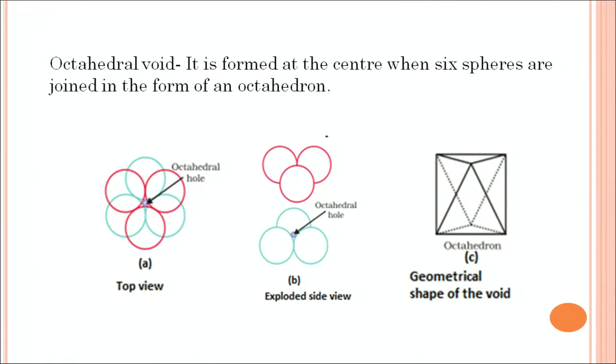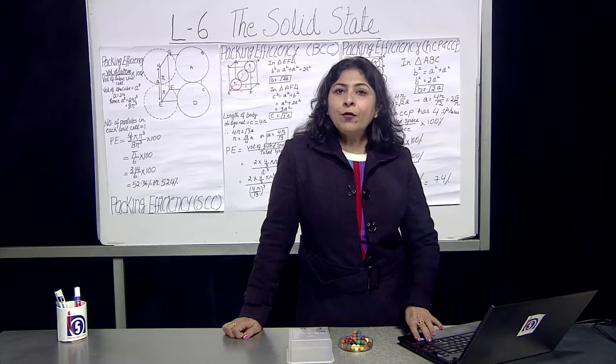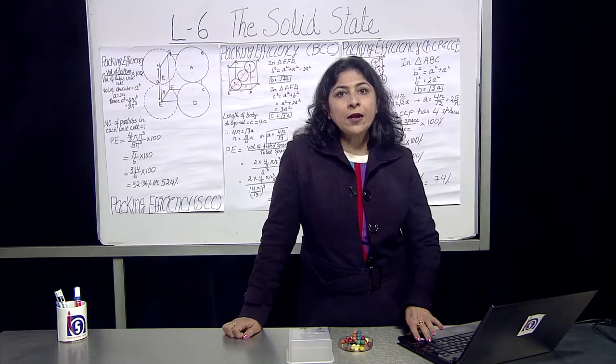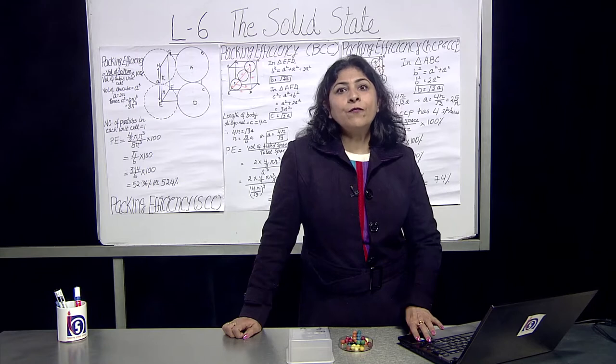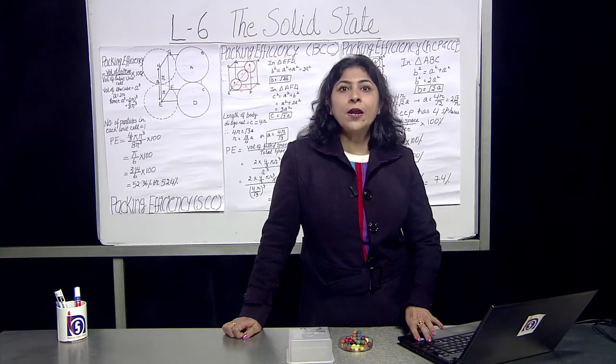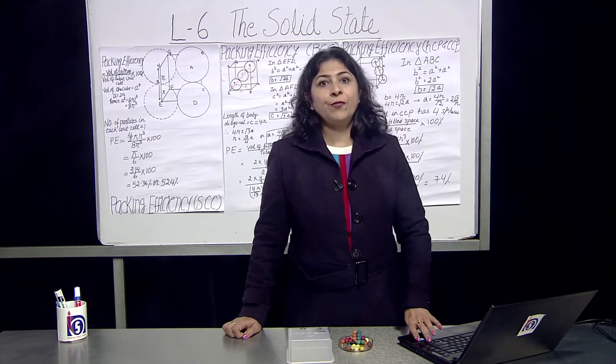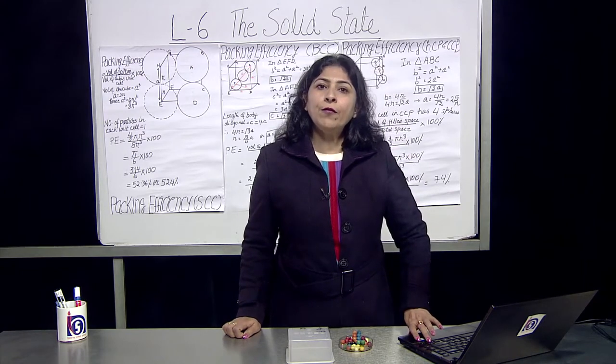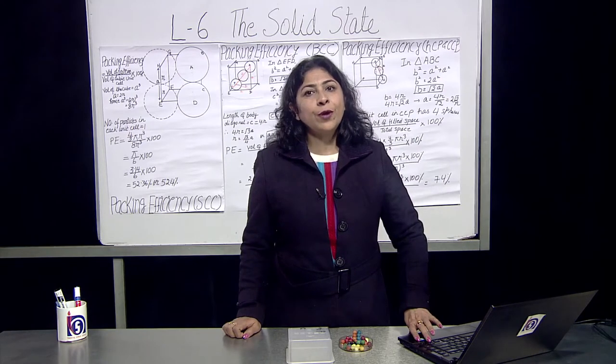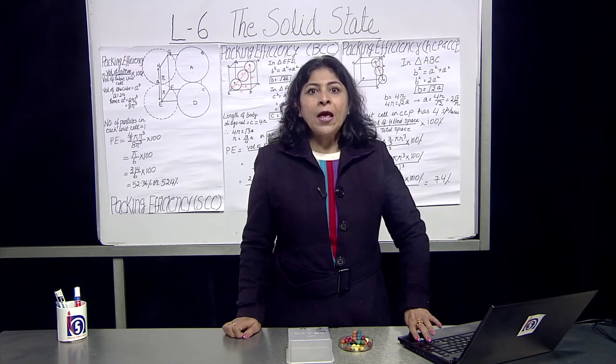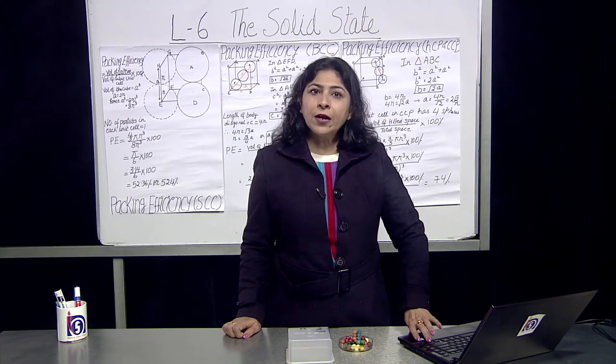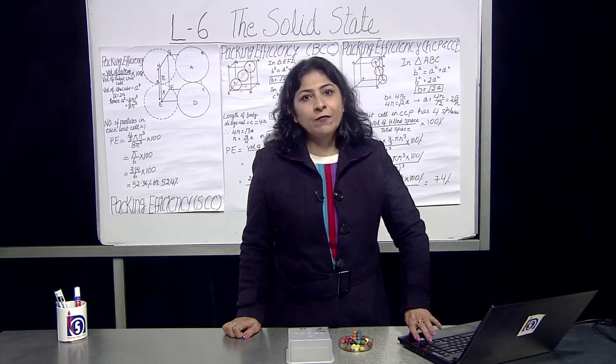In hexagonal closed packing, the cubic closed packing arrangement, the octahedral and the tetrahedral voids are present. The number of octahedral voids present in lattice is equal to the number of closed packed particles. The number of tetrahedral voids is twice the number of octahedral voids. This you please remember. For example, if the number of closed packed particles is equal to n, the number of particles present in octahedral void will be n and the number of particles present in tetrahedral voids will be 2n. So tetrahedral will show double.